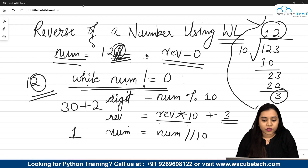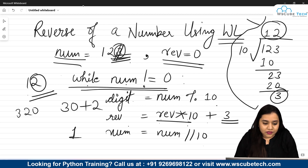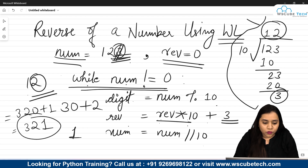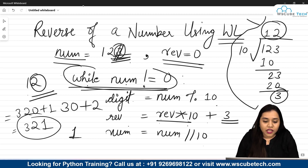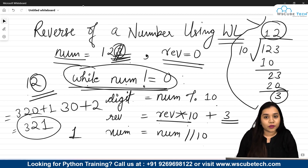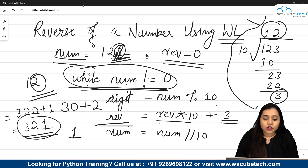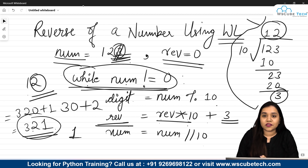In the final iteration, the remainder is 1. Reverse is 32, so 32 multiplied by 10 plus 1 gives 321. Then from the number 1, floor division by 10 gives 0, and the loop stops because the condition is while number is not equal to 0. Inside the reverse variable we obtain 321, which is the reverse of 123. This is how we obtain the reverse using the while loop.